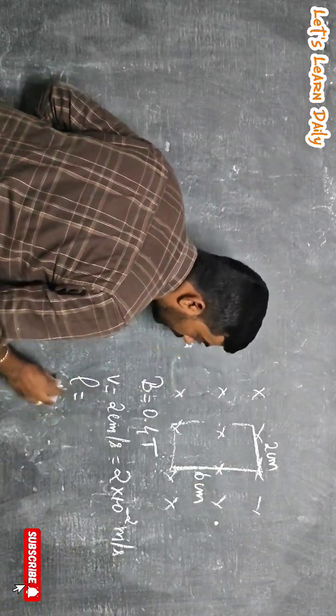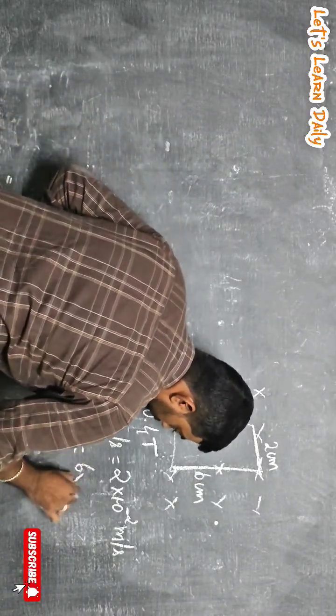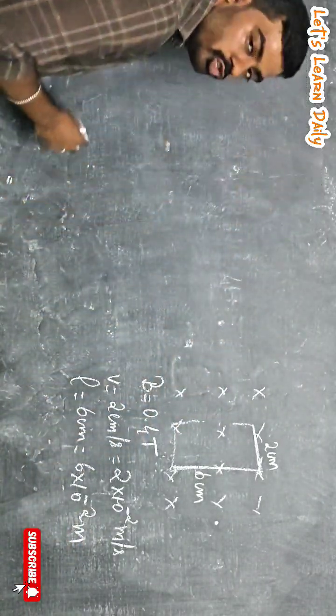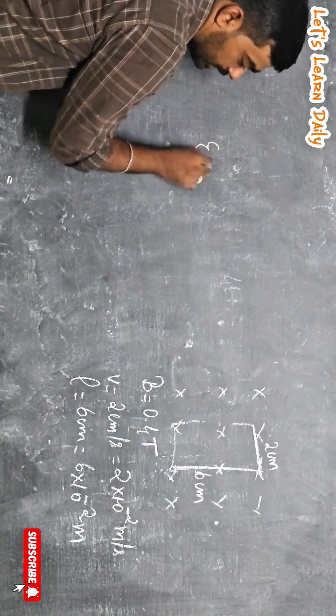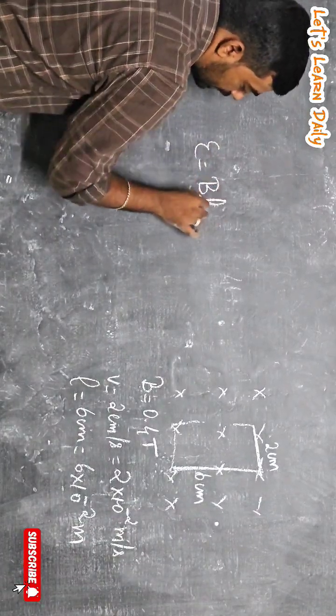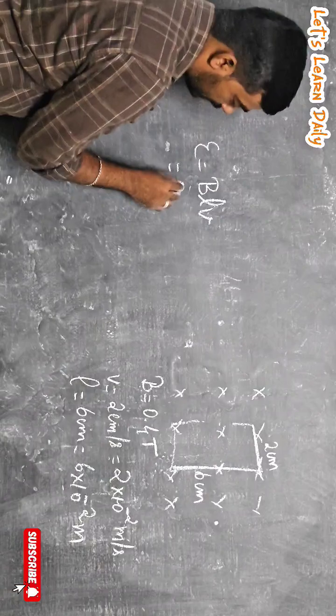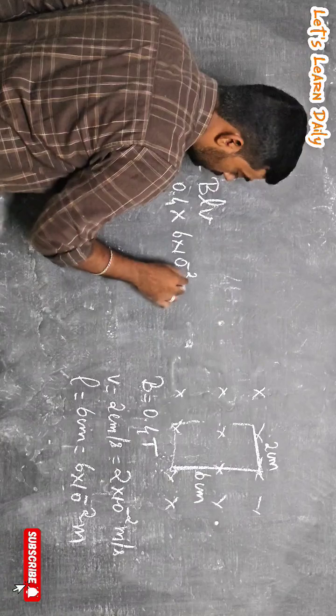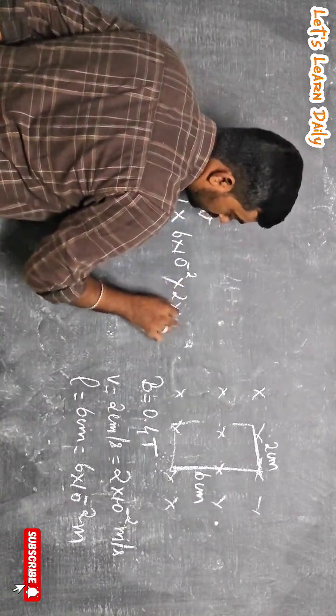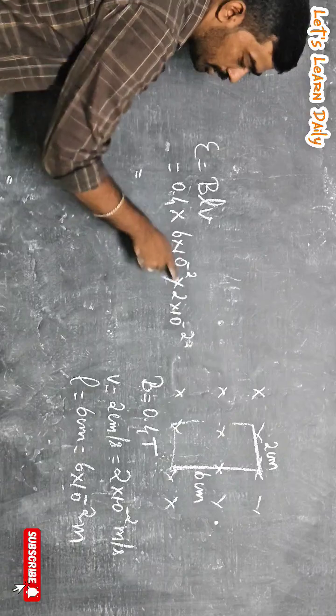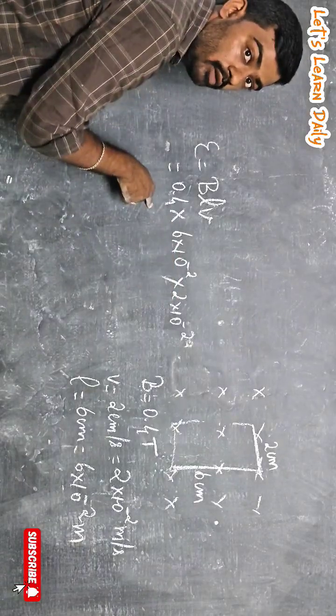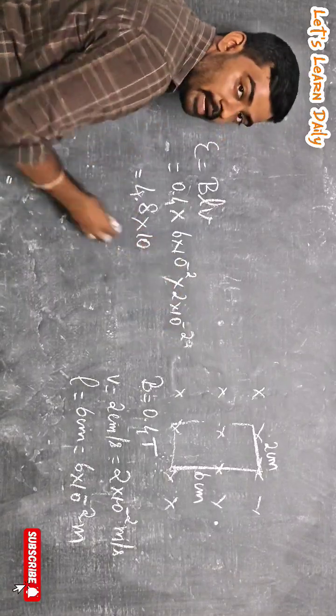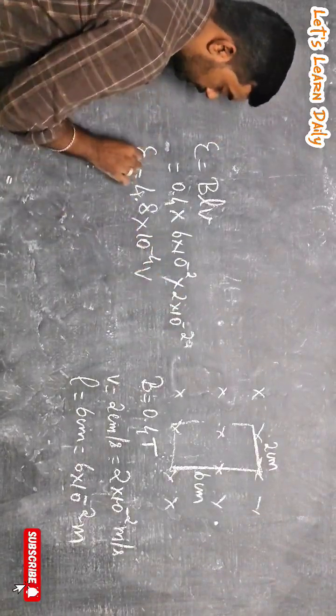So L equal to 6 into 10 power minus 2 meter. So E equal to BLV. So B value 0.4 into length 6 into 10 power minus 2 into V value 2 into 10 power minus 2. So this is 0.4 times 12, so 48 into 10 power minus 4 volts. So this will be your answer.